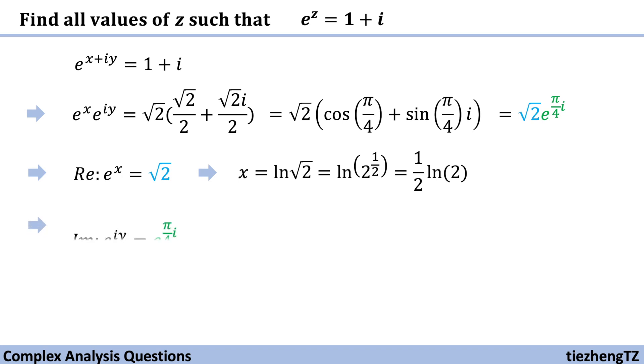For the imaginary part, the imaginary part is e to the power of iy. And in this case is e to the power of pi over 4 times i. So y is pi over 4.